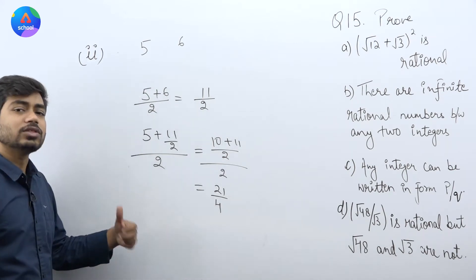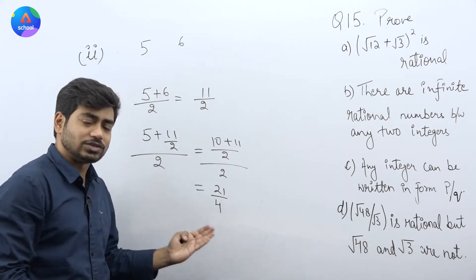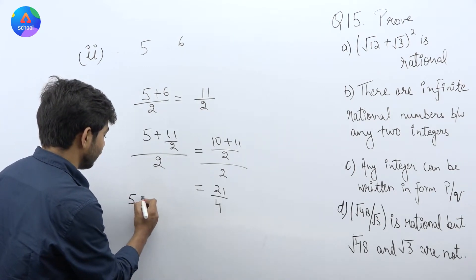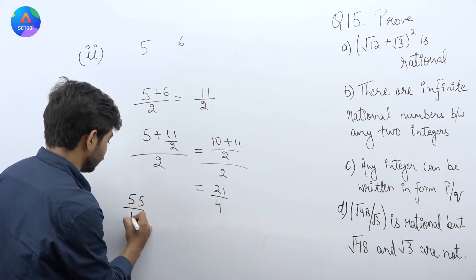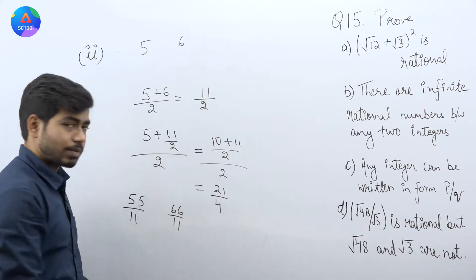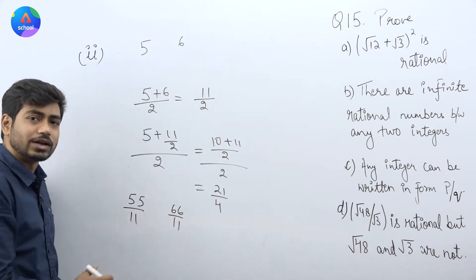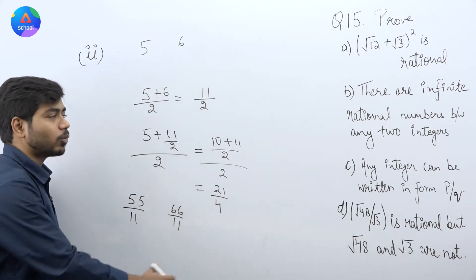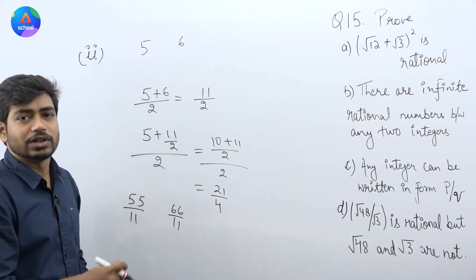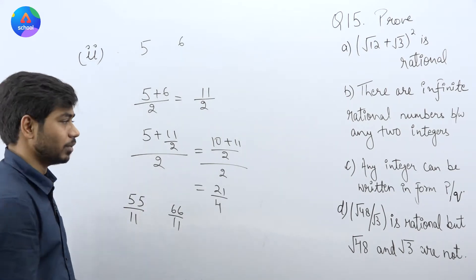इस तरीके से आप कितने भी mean लेते जाएंगे, वो आपको उसके बीच में rational numbers मिलते जाएंगे। 55/11 और 66/11 को आगे 11 से multiply करते जाएंगे, तो आपको infinite numbers मिल जाएंगे — किसी भी दो integers के बीच में infinite rational numbers होते हैं।